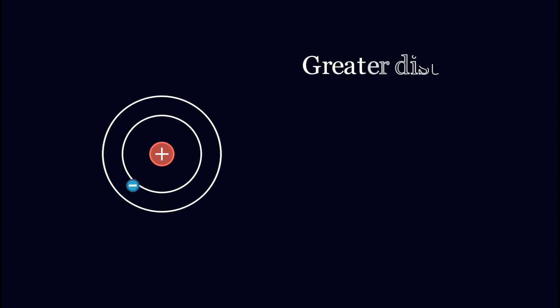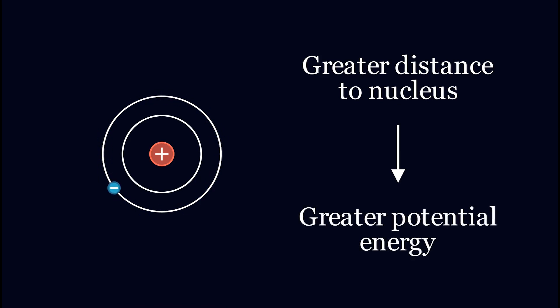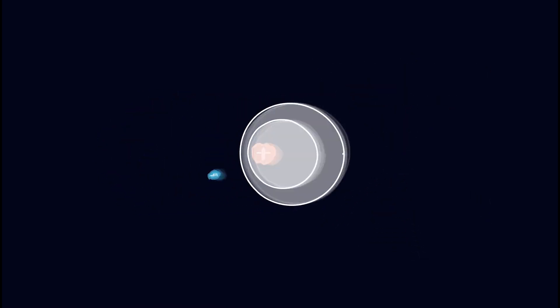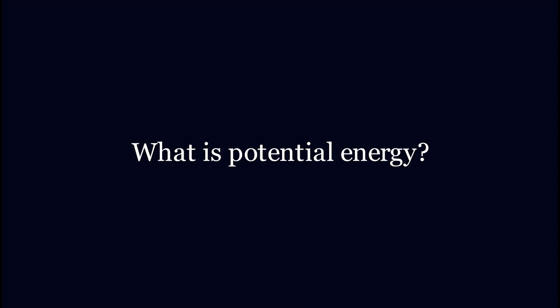If the electron were to orbit in this second shell further from the nucleus it would have a greater potential energy. So what exactly is potential energy? We describe potential energy as an energy store based on your position.